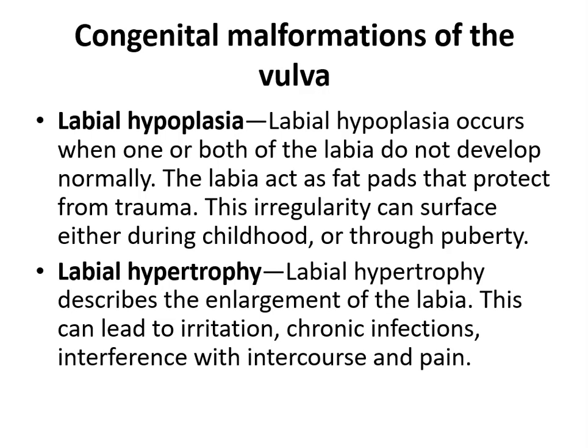Hypo means decreased development and hyper means excessive or more than normal growth and development. The first condition is labial hypoplasia. Labial hypoplasia occurs when one or both of the labia do not develop normally. There are two labias — labia minora and labia majora. The labia act as fat pads that protect from trauma. This irregularity can appear during childhood or throughout puberty.